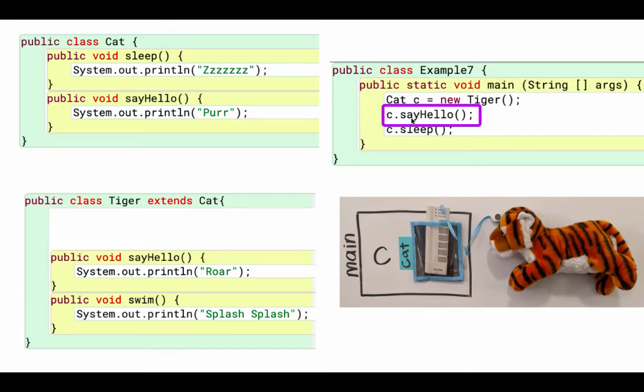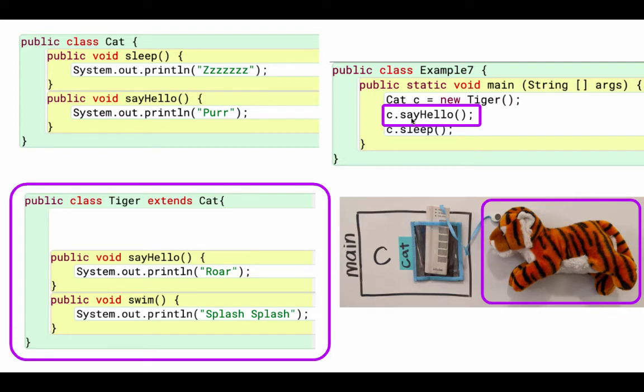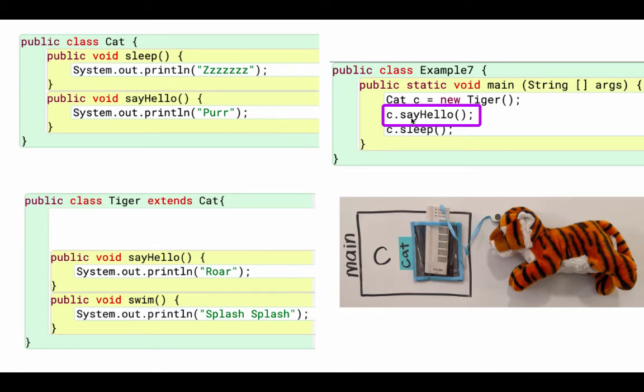So c dot sayHello. Remember, c references a Tiger. So we're going to start by looking in the Tiger class for the sayHello method. And we find it, it prints roar. c dot sayHello is over.